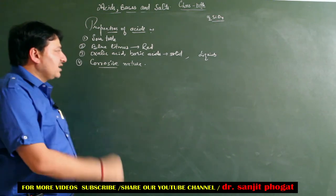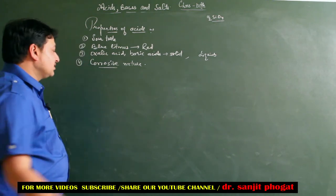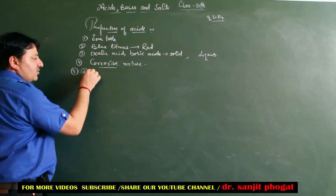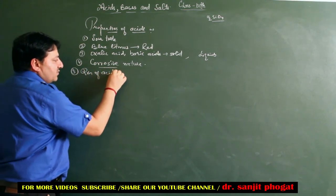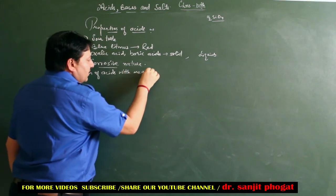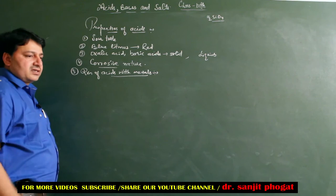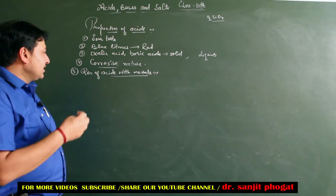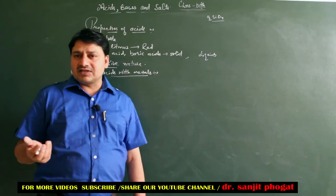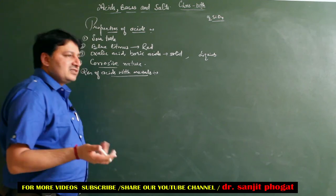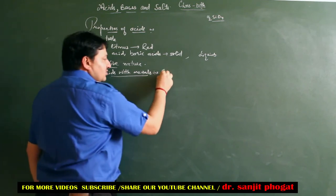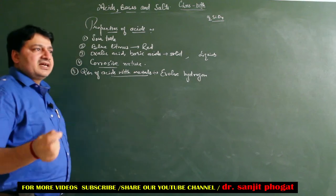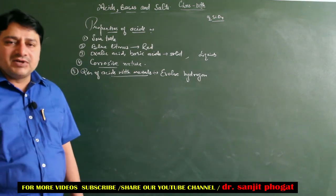यह Physical Properties हुईं, अब Chemical Properties की बात करते हैं। सबसे पहली Chemical Property - Reaction of Acids with Metals। Metals and Non-Metals वाले chapter में यह punch line थी कि जब Acids को Metals के साथ react करवाएंगे तो Hydrogen Gas evolve होती है।